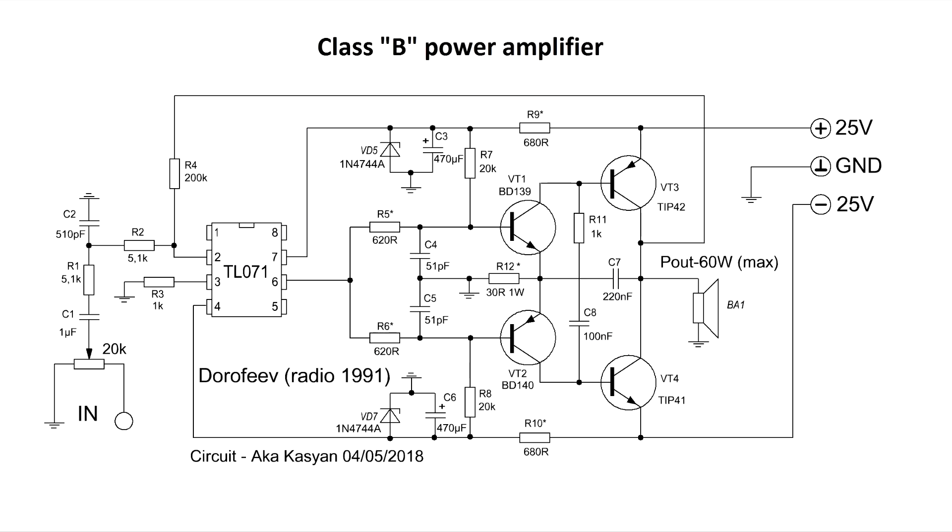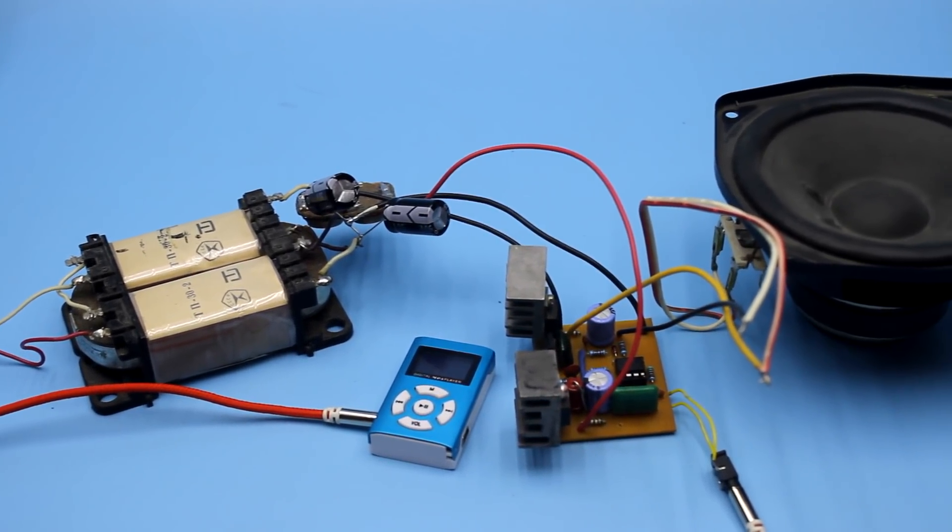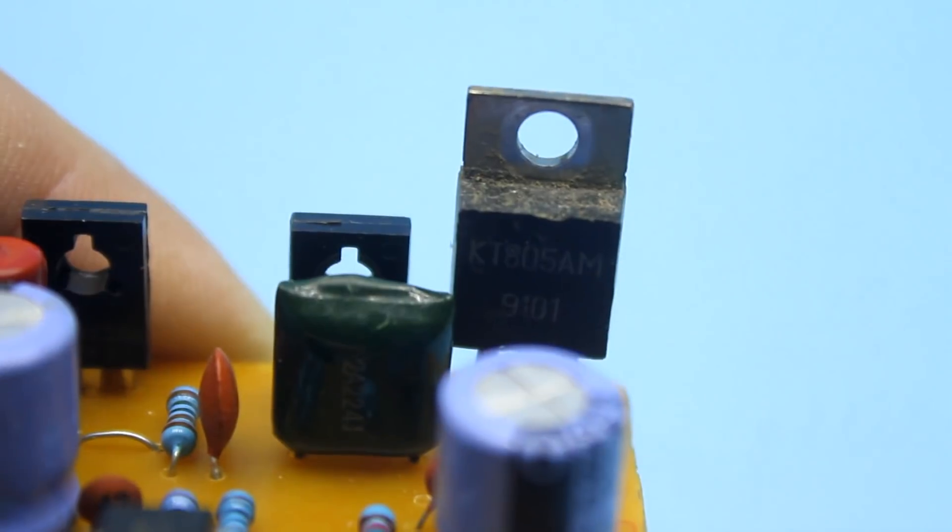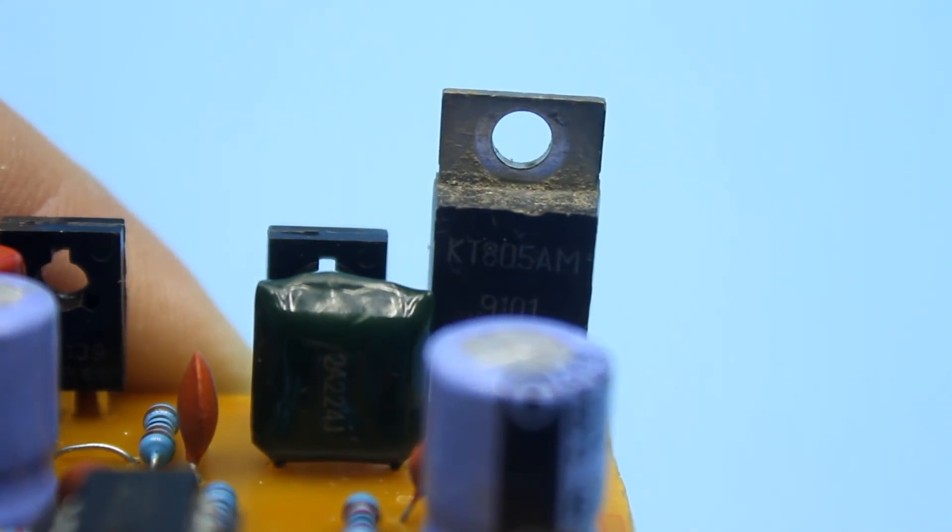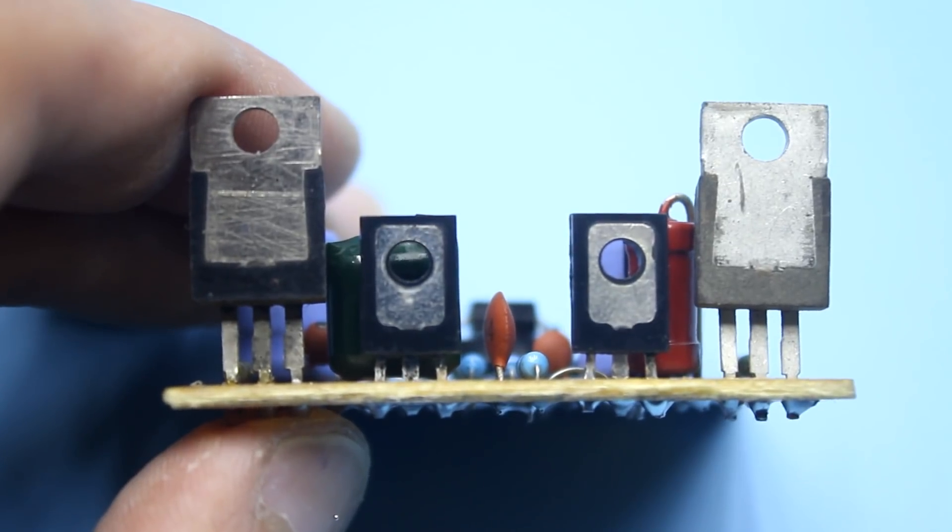The amplifier is powered by a bipolar source. The range of supply voltages are from plus minus 15 to plus minus 25. To increase the output power you can increase the supply voltage, but in this case you need to change the transistors of the end cascade to more powerful ones and recalculate several resistors.